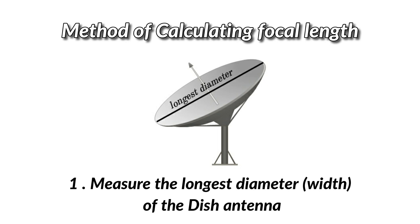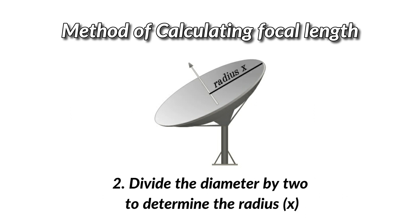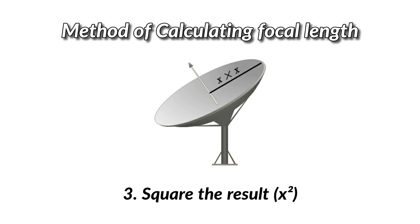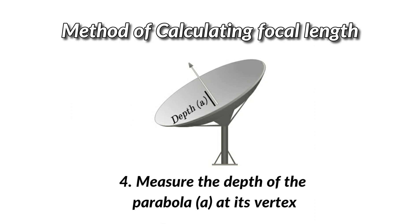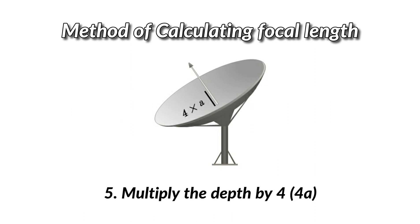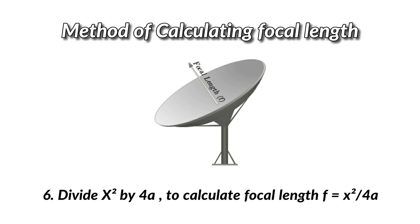Method of calculating focal length: First, measure the longest diameter (width) of the dish antenna. Divide the diameter by 2 to determine the radius x. Square the result to get x². Then measure the depth of the parabola (a) at its vertex and multiply the depth by 4 to get 4a. Finally, divide x² by 4a to calculate the focal length: F = x² / 4a.